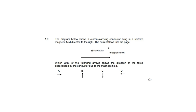Question 1.9: a current-carrying conductor lies in a uniform magnetic field directed to the right; current flows into the page. We need the direction of the force on the conductor. Since a force is being induced, this is a motor situation, so we apply the left-hand motor rule: index finger points right (field direction), middle finger points into the page (current), and the thumb points downward (force direction). The correct answer is C.